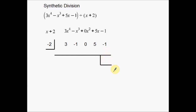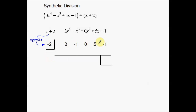Now where do all these numbers come from? We're dividing by x plus 2, and the number that goes in the box is always going to be the opposite of this number. So since it's x plus 2, the number we put inside the box is going to be negative 2. That happens every single time — you just use the opposite of that number.